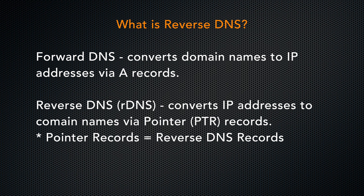A little background before we get started. Forward DNS uses A records to convert domain names to IP addresses. An A entry points a host name or domain to an IP address, which allows other computers to find your server on the internet.